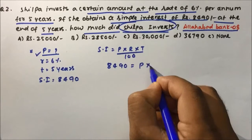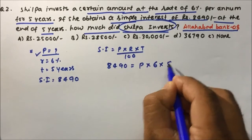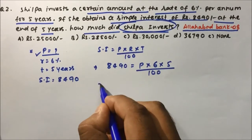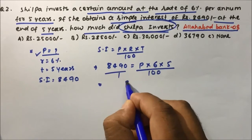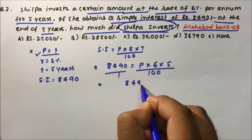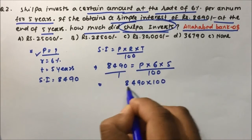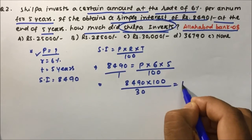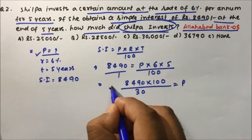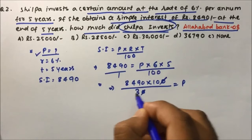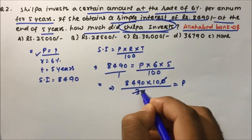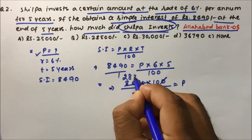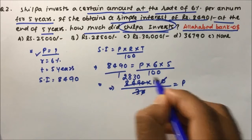Cross multiplying: Principal = (8,490 × 100) / 30. Simplifying, 10 cancels with 10, then 3 divides: 3 into 8 gives... working through the arithmetic gives 849,000 / 30, which equals 28,300.